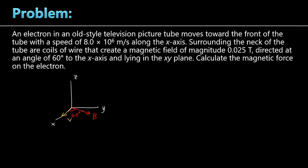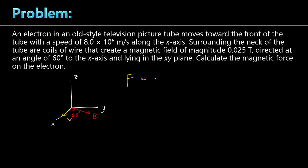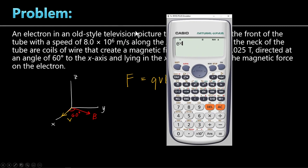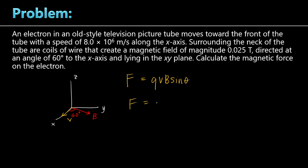Now we have the velocity vector and the magnetic field vector, so we can find the force. F equals QVB sine of theta, where theta is the angle between the velocity and the magnetic field vectors. In the calculator: charge of electron (constant 23) times 8 times 10 to the 6, times 0.025, times sine of 60 degrees. The answer is approximately 2.8 times 10 to the negative 14 Newtons.